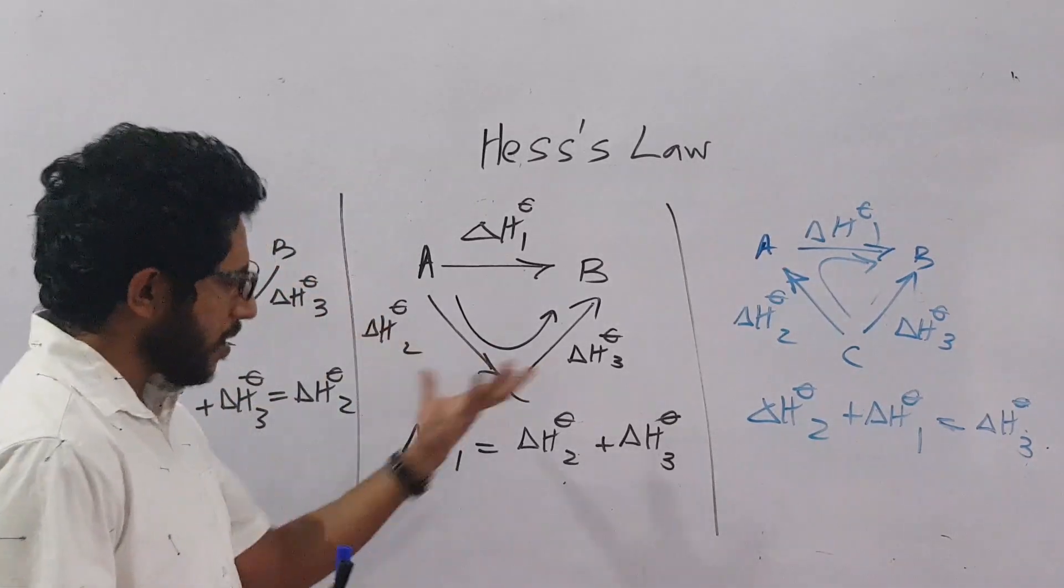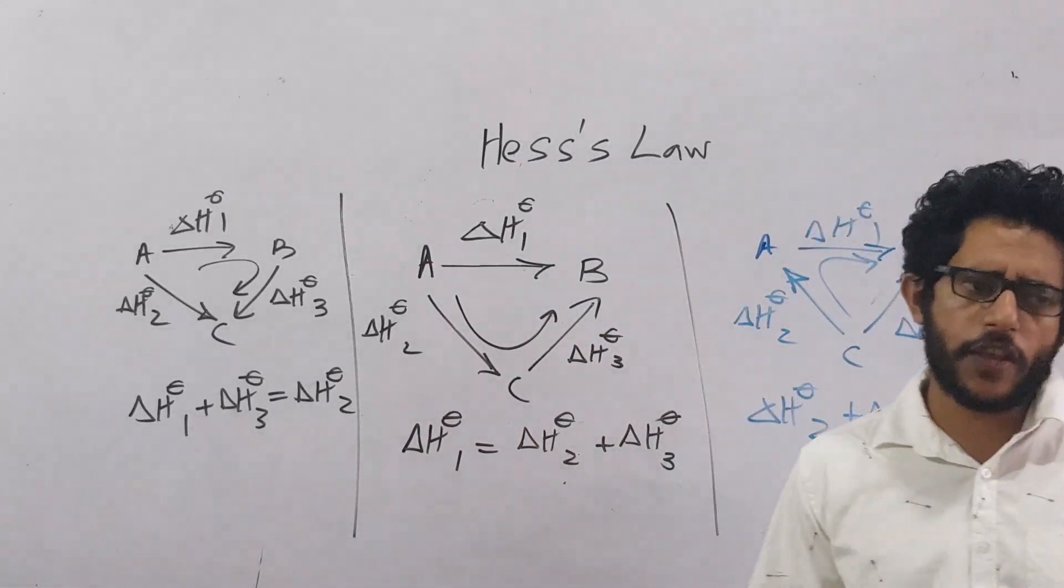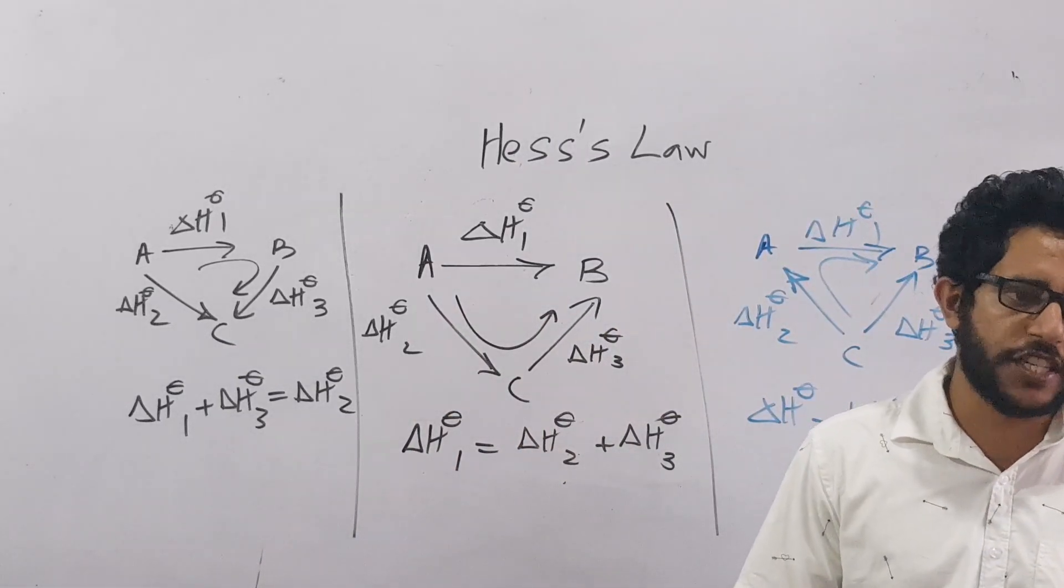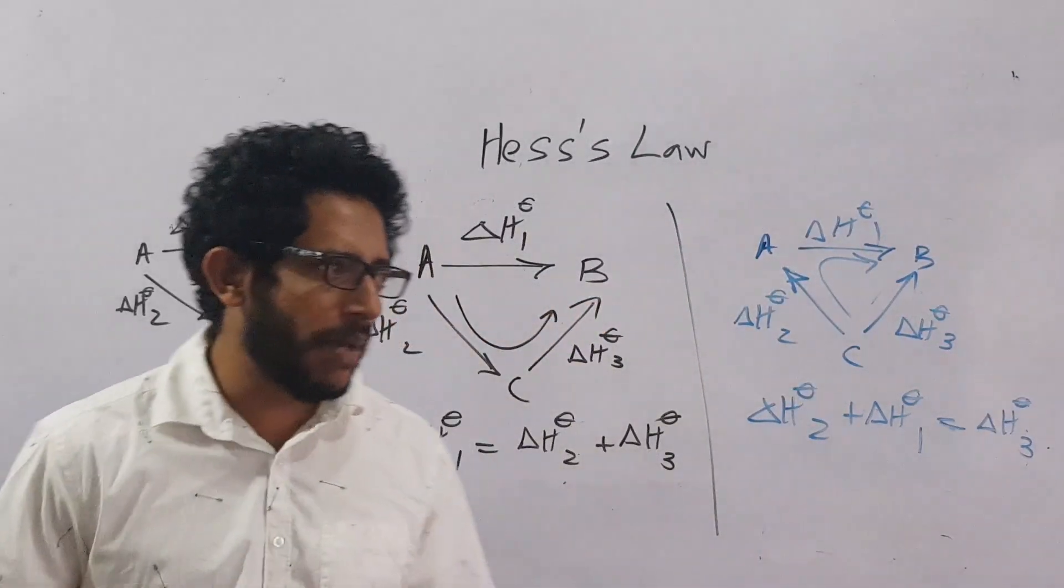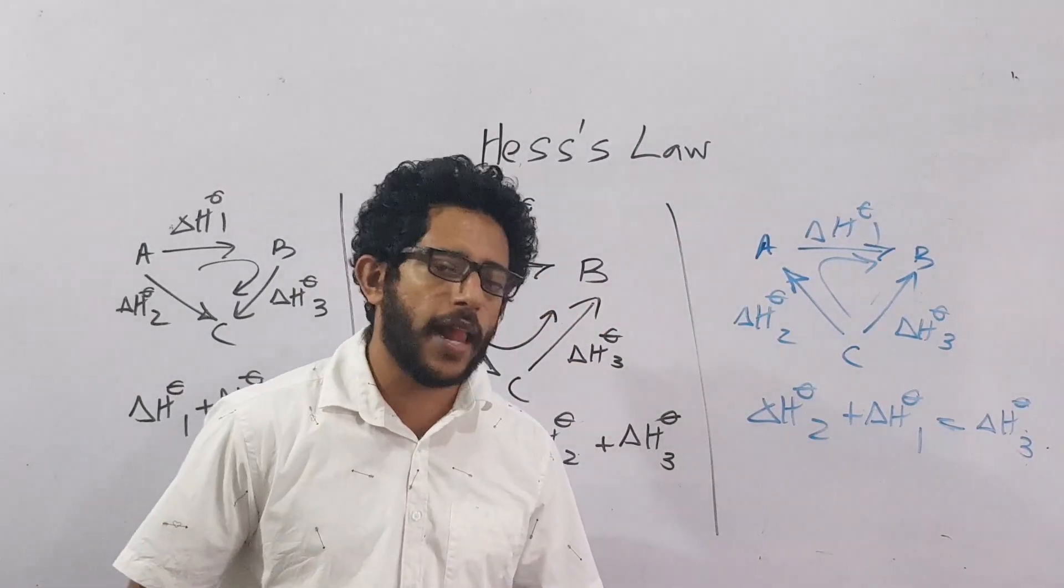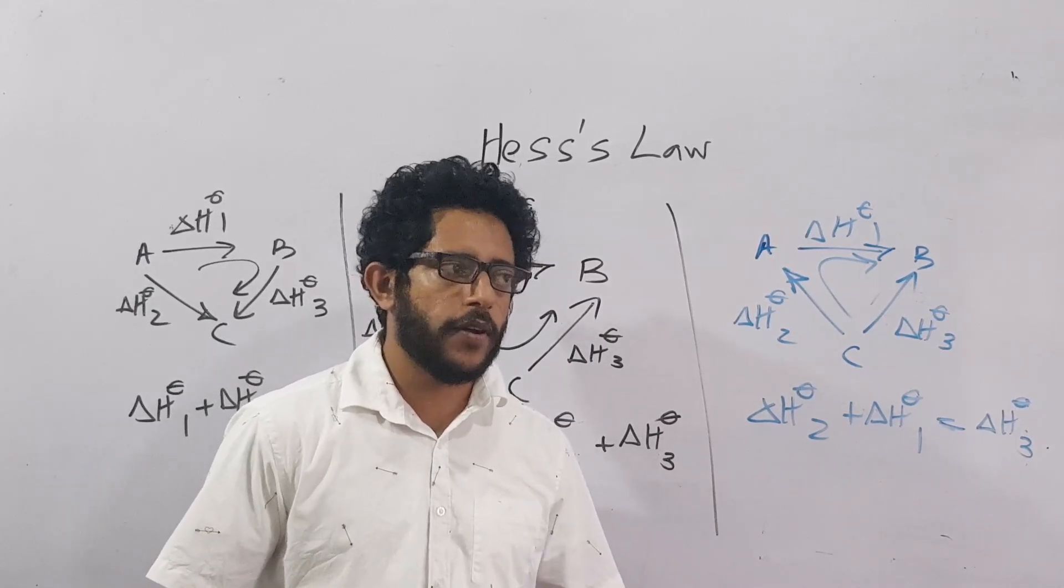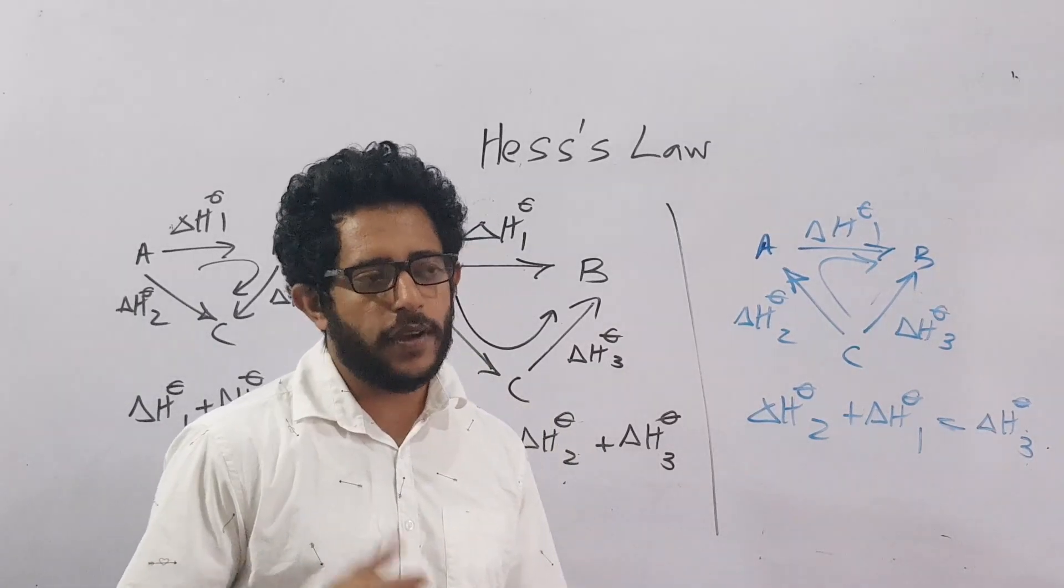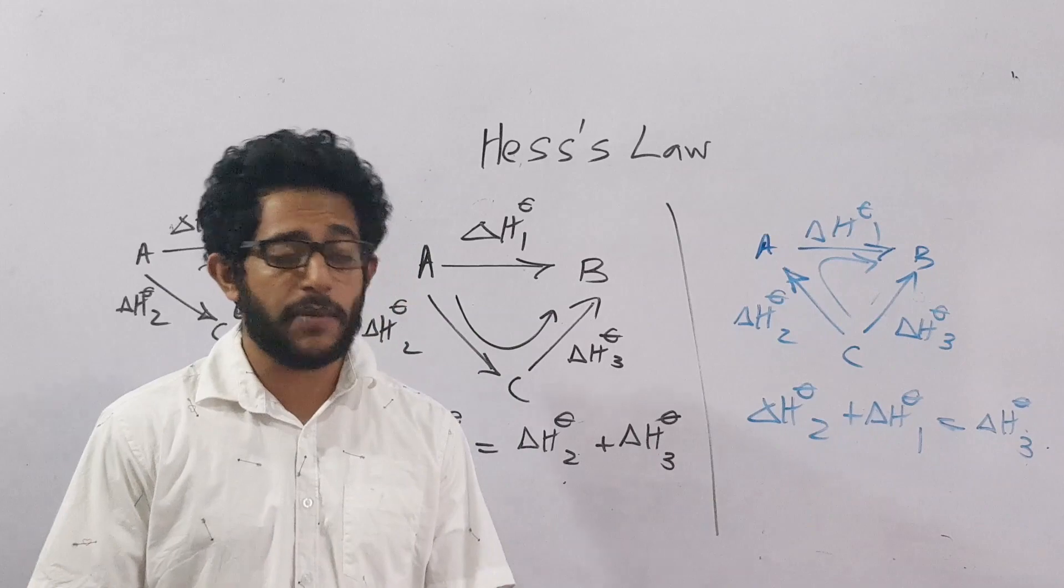To construct this Hess cycle, we call this stuff as enthalpy cycles, we use the standard enthalpy definitions. In AS level, we mainly use three enthalpy definitions. Standard enthalpy of formation, standard enthalpy of combustion, and standard enthalpy of bond dissociation. Something similar to that called atomization.